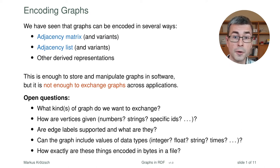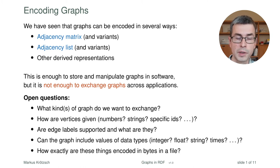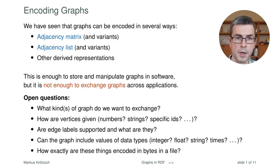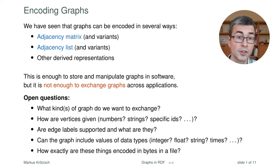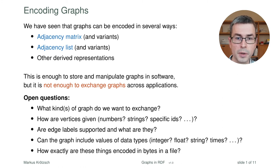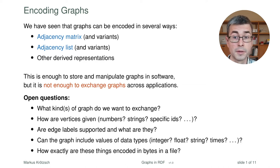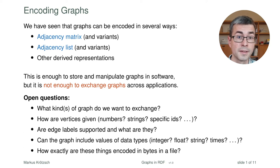We also have to decide how the vertices are actually given. Adjacency matrices and lists are mainly ways to encode the edges, but they don't tell us what the vertices are. In practice, of course, this will matter. Are these numbers, are these strings, do they have some specific identifiers? Do we support edge labels, and if so, what are they — strings or identifiers? In practice, we also want to have data of many types: integers, floating point numbers, actual strings and texts, times and dates, and many other things. The high-level data structures do not tell us about these aspects.